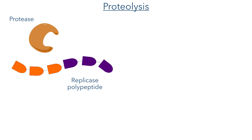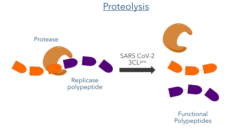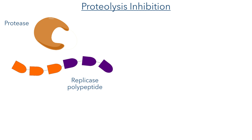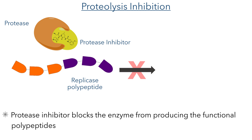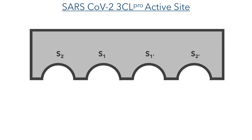The protease is an enzyme which can bind to the replicase polypeptide and cleave it. This releases the functional polypeptides which continue the viral life cycle. In the presence of a protease inhibitor, this process can't occur as the protease enzyme is inhibited and can't bind to the replicase polypeptide and carry out the cleavage reaction. This protease inhibitor does this by binding to the active site of the enzyme. This active site is identical in both the SARS-CoV-1 virus which caused the SARS outbreak in 2002 and the SARS-CoV-2 enzyme which is involved in COVID-19.